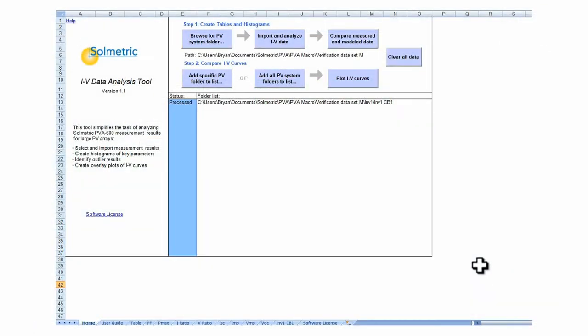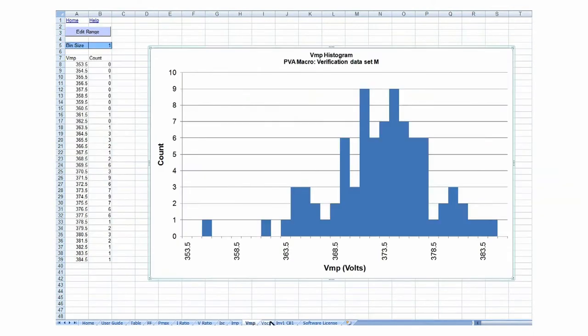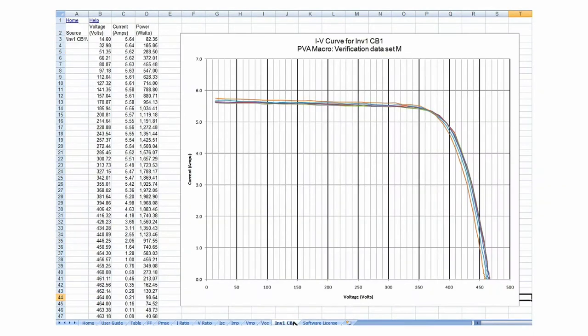The IV Data Analysis Tool provides a convenient method of analyzing PV Analyzer data. The tool imports the data from all the saved traces from a site visit and generates tables, charts, histograms, and IV plots that can be used for client reports and to identify problem strings.